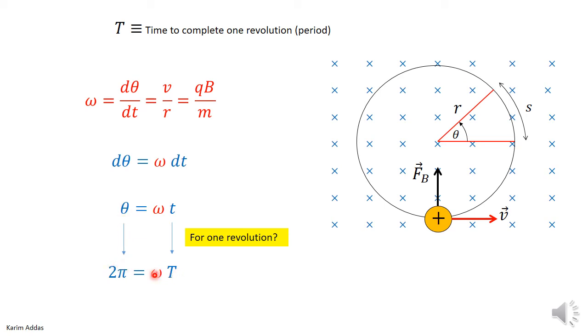This gives us a relationship between the period of revolution and the angular speed. Since we know omega is qB/m, we can substitute the value of omega here and get the period of revolution.